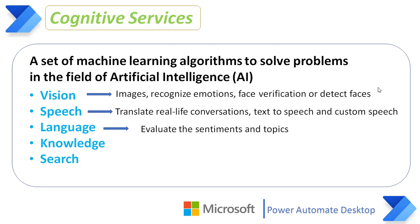Language cognitive service allows your application to process natural language, evaluate sentiments on topics, and learn how to recognize what a user wants. Language Understanding Intelligent Service, that is LUIS, provides a simple tool that enables you to build your own language model, allowing any application to understand commands and act accordingly. It also provides sentiment analysis by which the app can identify positive and negative sentiments.